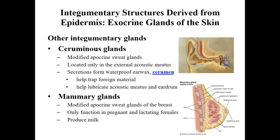Another type of gland we have are ceruminous glands, which secrete cerumen — earwax. Ceruminous glands are modified apocrine sweat glands, and their secretions are a thick, waxy material that traps potentially damaging agents trying to move toward the eardrum. Cerumen is important and we don't want to remove it all, though too much cerumen can cause hearing loss. Mammary glands are also modified apocrine sweat glands that only function during pregnancy and lactation in females, producing milk to feed offspring.